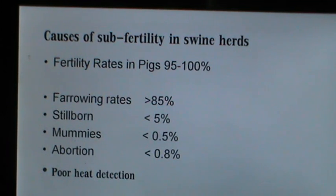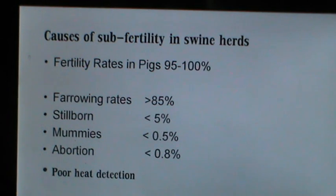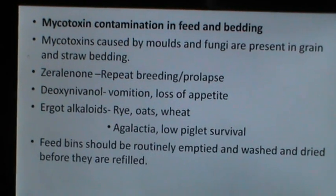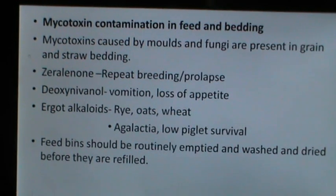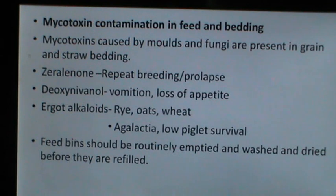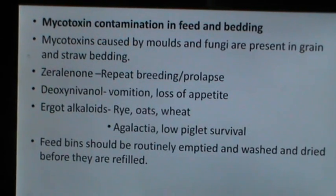Sub-fertility in swine herds: fertility rates in pigs are high at 95 to 100%. Farrowing rates are greater than 85%, stillbirths less than 5%, mummies less than 0.5%, and abortion less than 0.8%. A frequent cause of sub-fertility is poor estrus detection. Mycotoxin contamination in feed and bedding can also result in sub-fertility. Mycotoxins caused by moulds and fungi are present in grain and straw bedding. Zearalenone, a mycotoxin, can cause repeat breeding and prolapse.